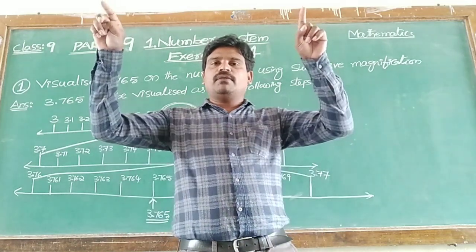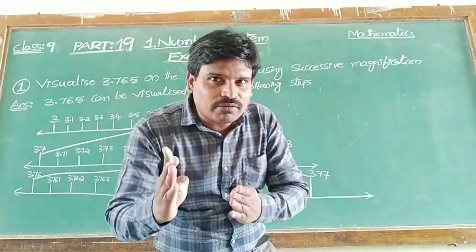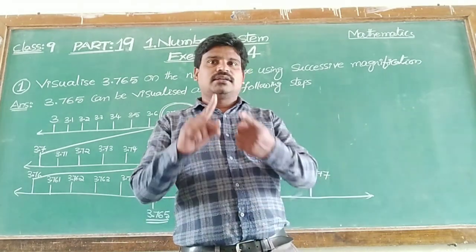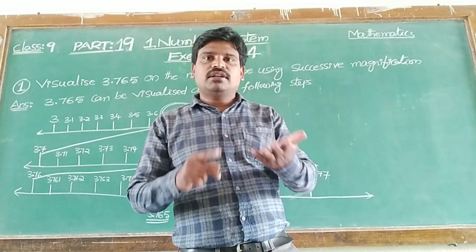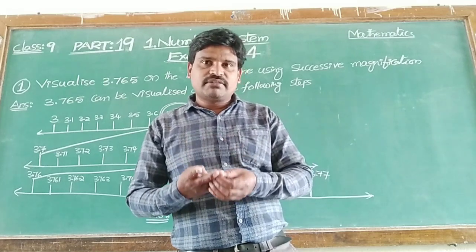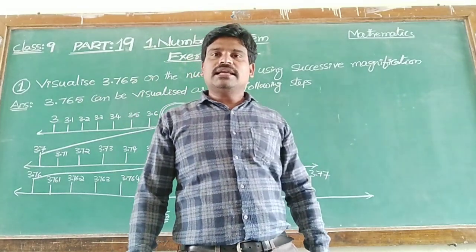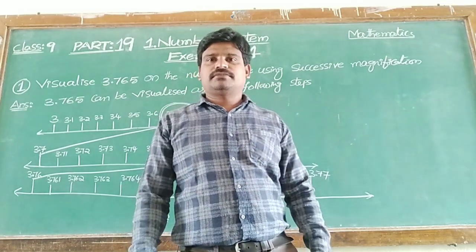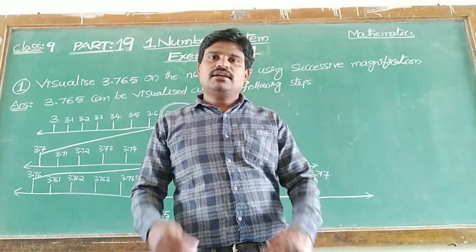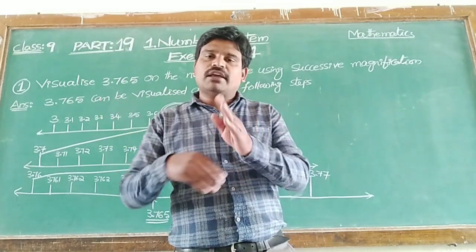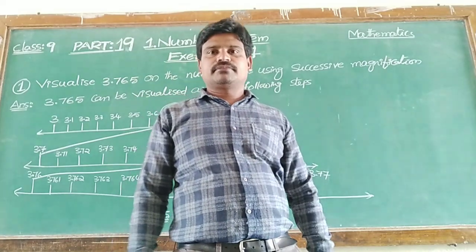Then we take 3 and 4 on the number line, and between 3 and 4 we make 10 equal portions. I have taken the two whole numbers 3 and 4, and between 3 and 4 we make 10 equal parts, then we go to find 3.5 between them.